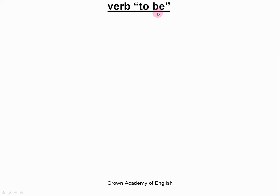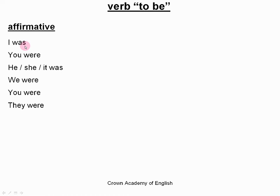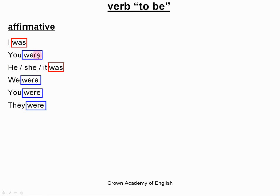The verb 'to be' is an exception and is very important because we use it in lots of other verbs. The affirmative: I was. You were. He, she, it was. We were. You were. And they were. The verb 'to be' is the only verb where the form is different for each subject — I and he take 'was', and all the others take 'were'.